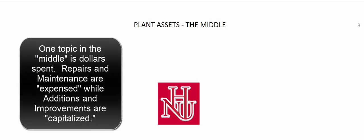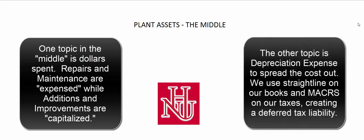Big picture: there are two things to worry about while using assets in the middle. First, any dollars spent must be either expensed or capitalized — repair and maintenance gets expensed, capital improvements or additions get capitalized. Second, we depreciate the asset, spreading its cost over its estimated useful life. On our books we use straight-line; on our tax return we use MACRS, meaning more depreciation expense in early years and less later. Congress likes this because it encourages businesses to buy new equipment and plants.